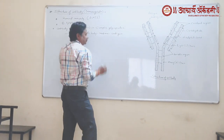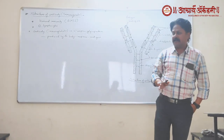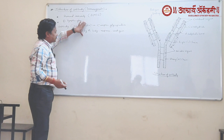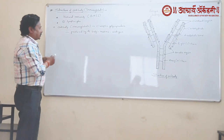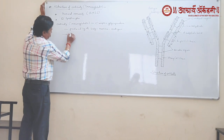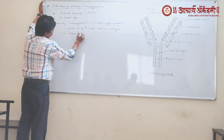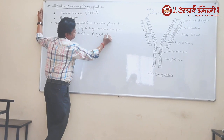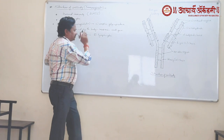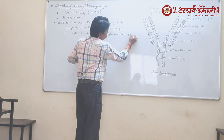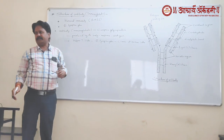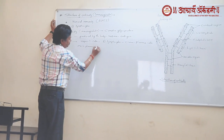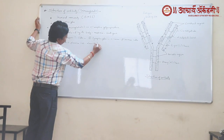Antibodies are produced in response to antigens. An antigen may be any foreign substance which enters into your body and stimulates the body for production of antibodies. Whenever any antigen enters the body, it stimulates helper T-cells, and these helper T-cells stimulate B-lymphocytes. Once stimulated, B-lymphocytes produce plasma cells, and each plasma cell produces 2000 molecules of antibodies.